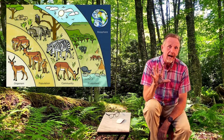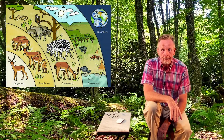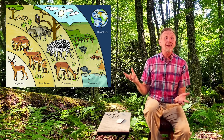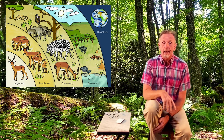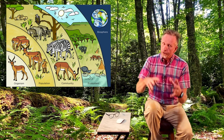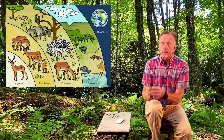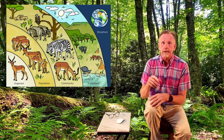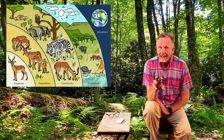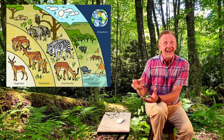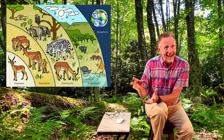Ecologists look at five levels of organization. The biosphere is the whole planet with everything. Then they look at ecosystems — one particular ecosystem like the deciduous forest, rainforest, or desert. Within the ecosystem they look at communities, which are all the types of animals that interact with each other.